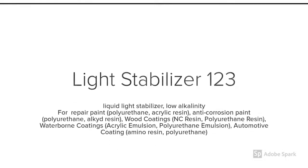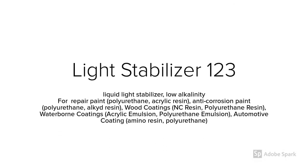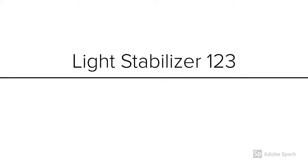Light Stabilizer 123 is a liquid light stabilizer with low alkalinity. It is used for repair paint, anti-corrosion paint, wood coatings, waterborne coatings, and automotive coatings.